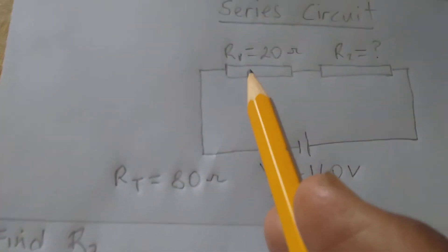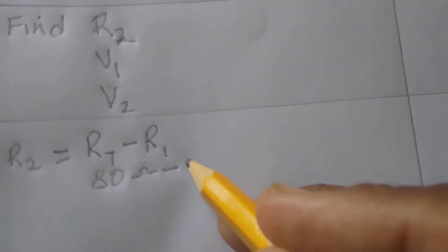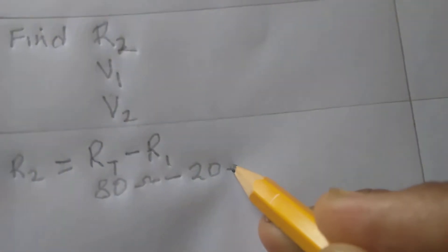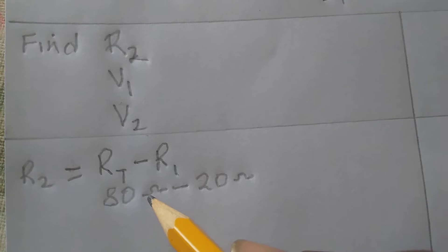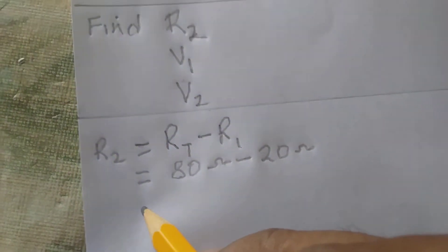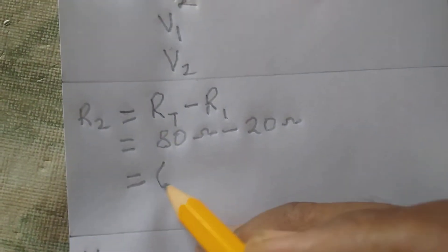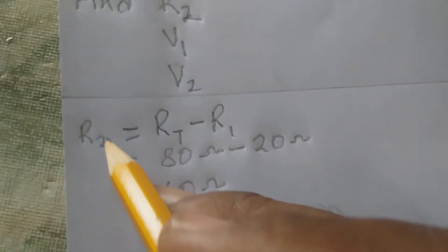RT is 80 ohms minus R1 which is 20 ohms, so R2 is equal to 60 ohms.